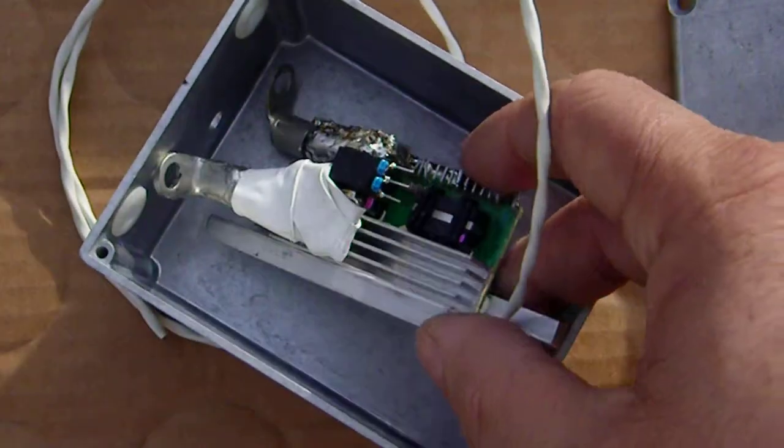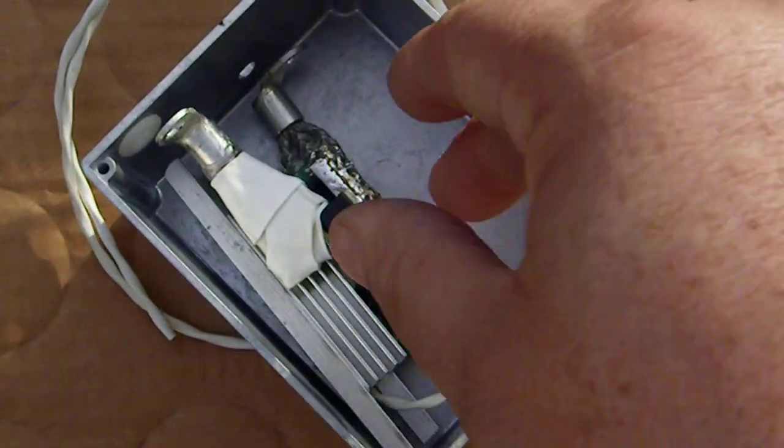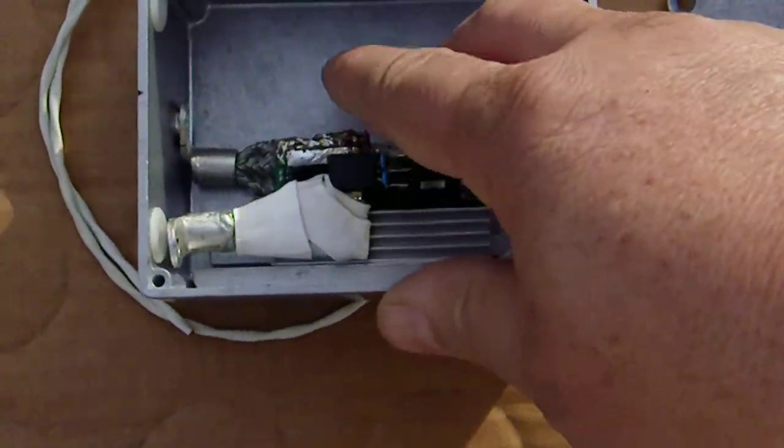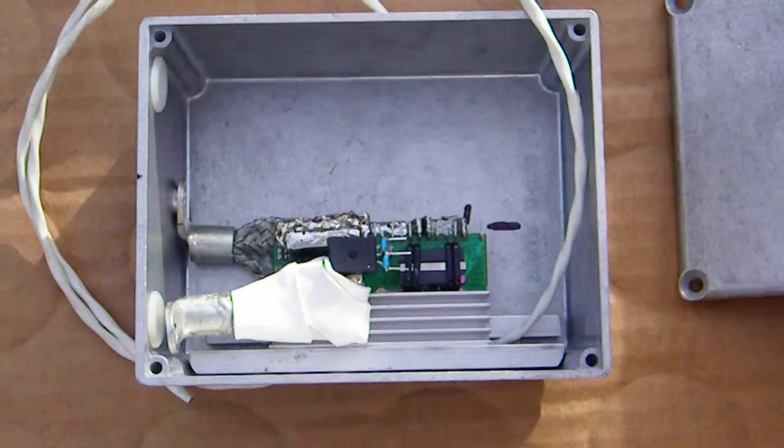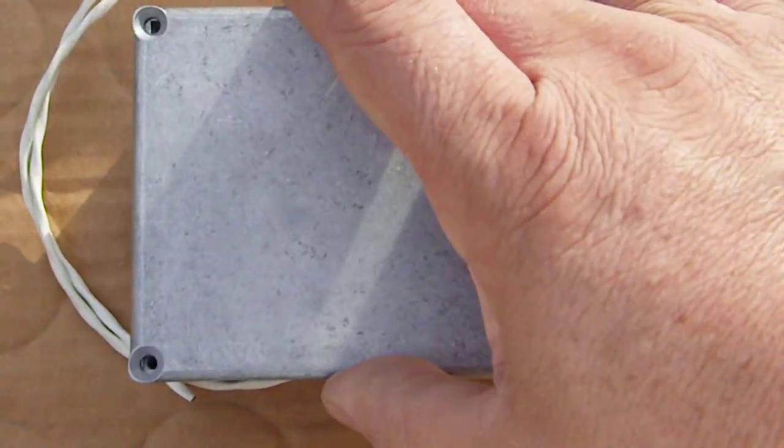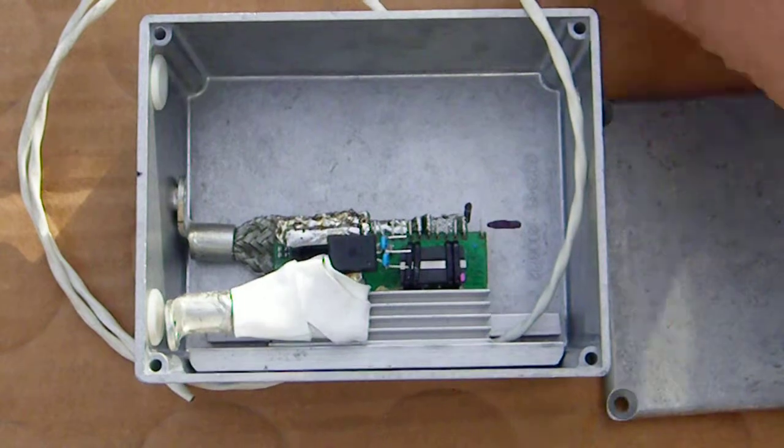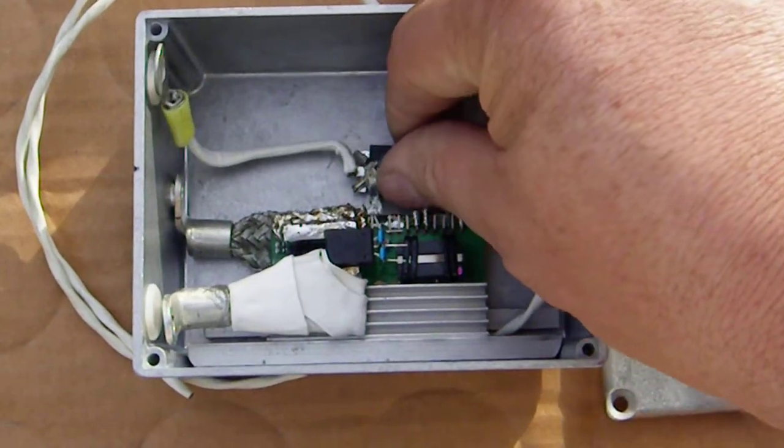Now, these will be epoxied in here with epoxy heat sink compound, two part. And then, there's the lid. But this will be mounted in here.